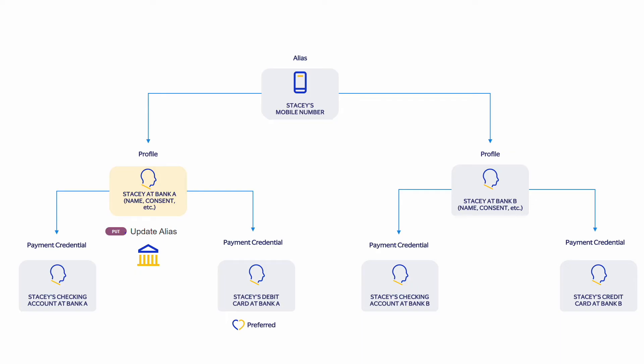Now let's look at the update alias and update payment credential APIs. These APIs offer the flexibility to modify a user's profile and payment credential information. Suppose Stacey has received a new passport and needs to update her new passport details onto her alias profile — she can do this using the update alias API. It's crucial to note that as the financial institutions act as the data controllers within the alias directory service, they are responsible for the data quality and validation of the data within the directory. Therefore, they are accountable for updating the data stored in the alias directory, such as user profile or payment credential details, irrespective of whether they are Visa credentials or not.